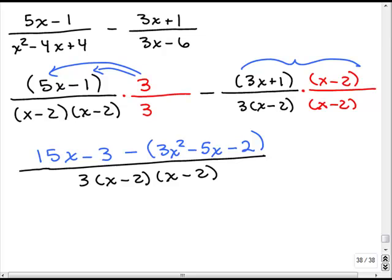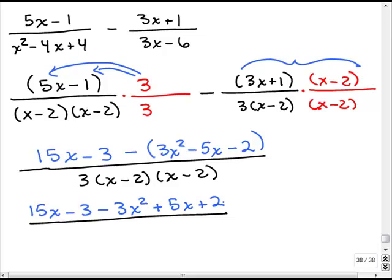So, I need to distribute my minus sign through there now. So, this will give me 15x minus 3 and I'm going to now distribute my minus sign. Minus 3x squared plus 5x plus 2. And, the denominator is still 3 times x minus 2 times x minus 2.